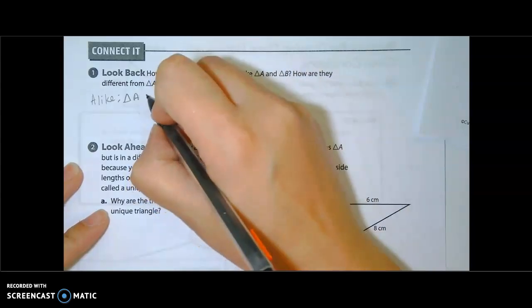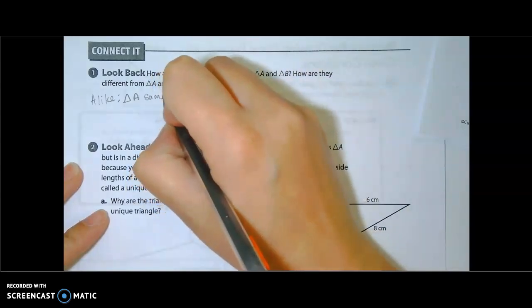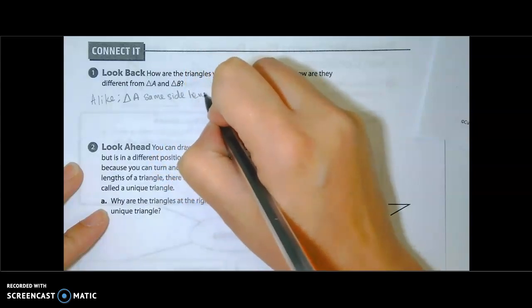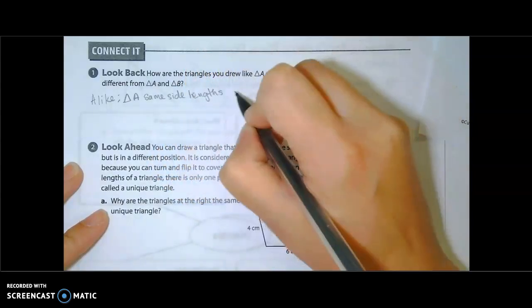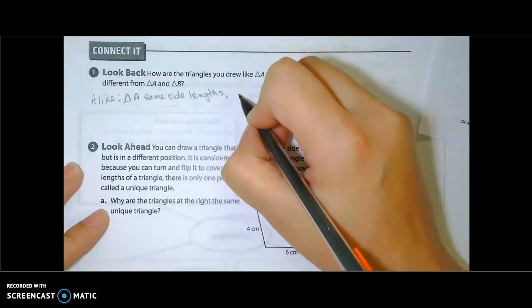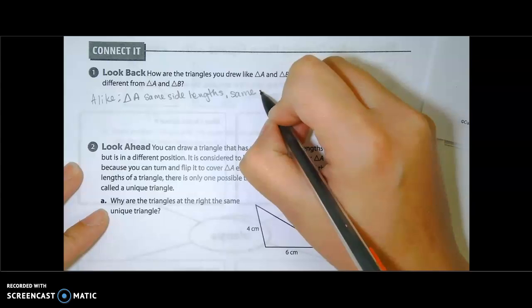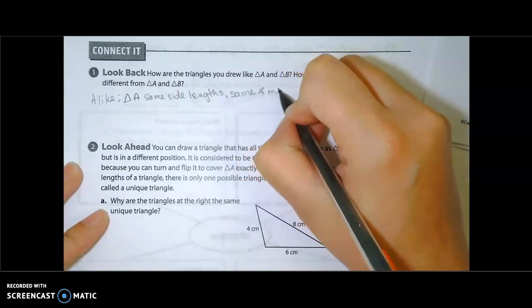when we look at triangle A, it had same side lengths. And some of us realized it also had same angle measures. That was the only way we could draw it.